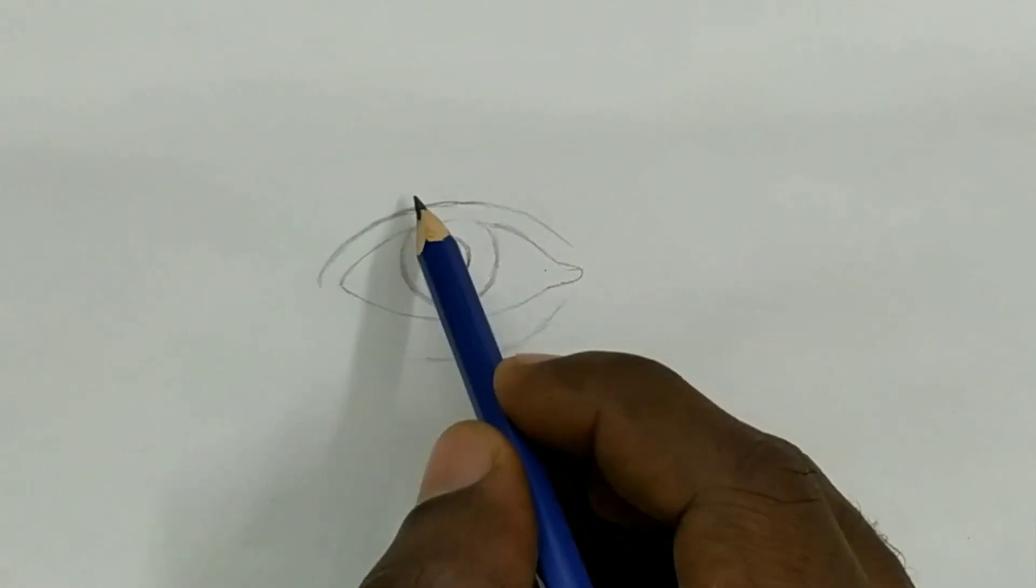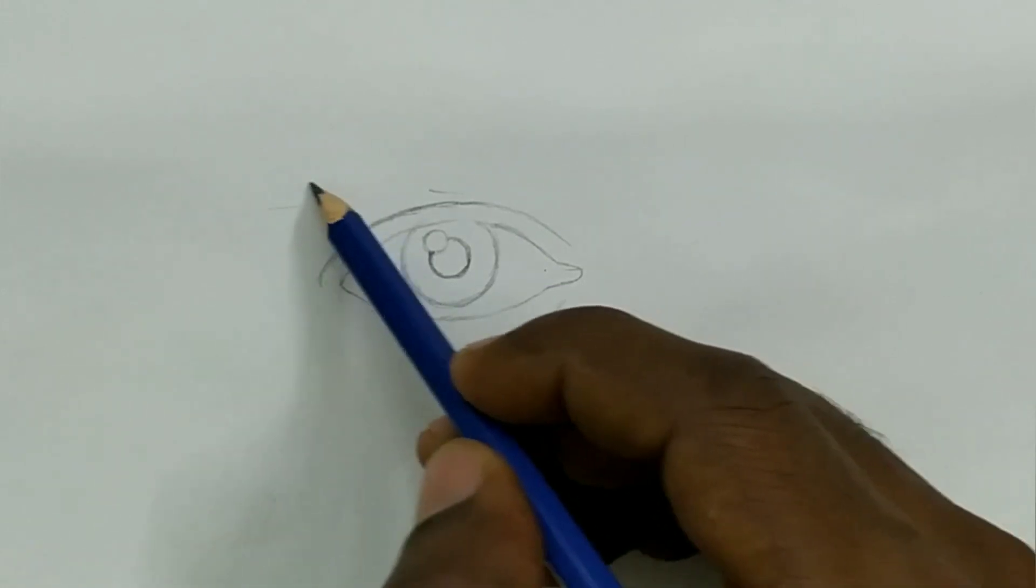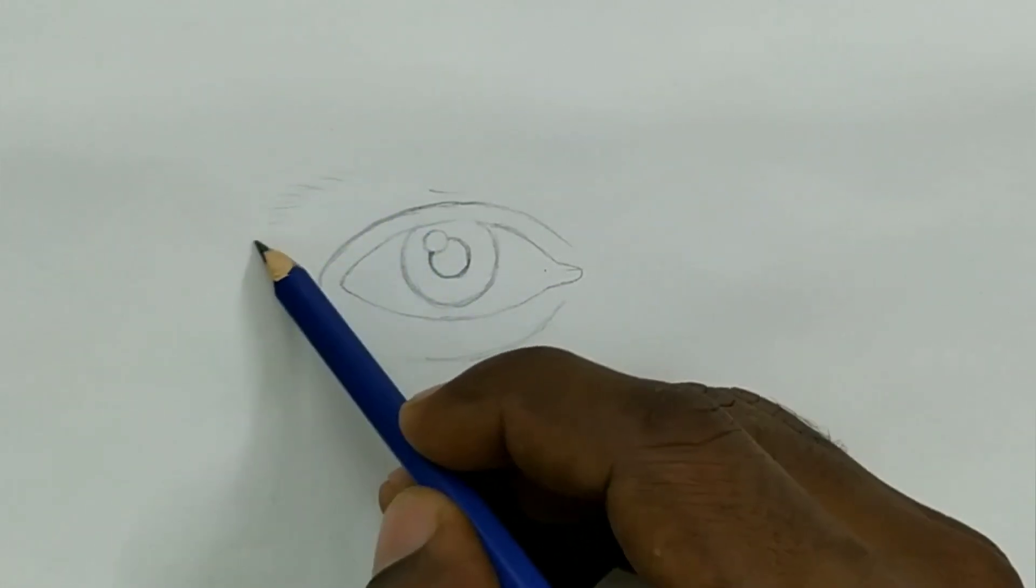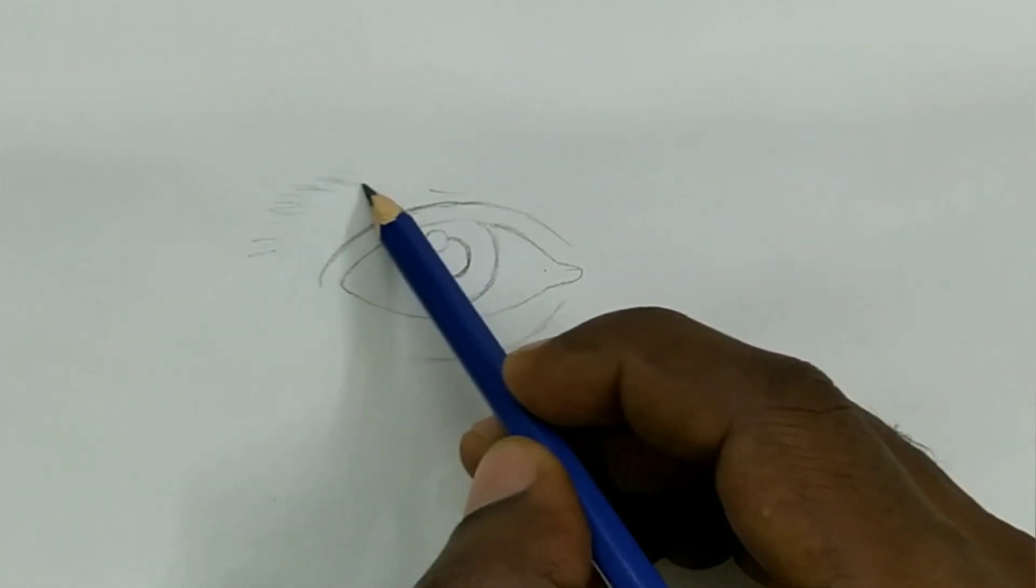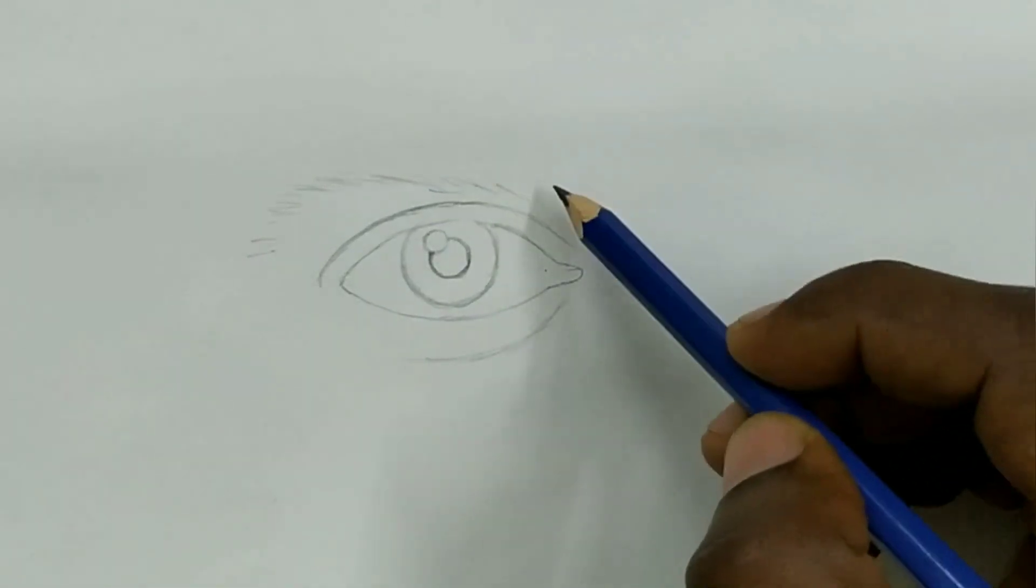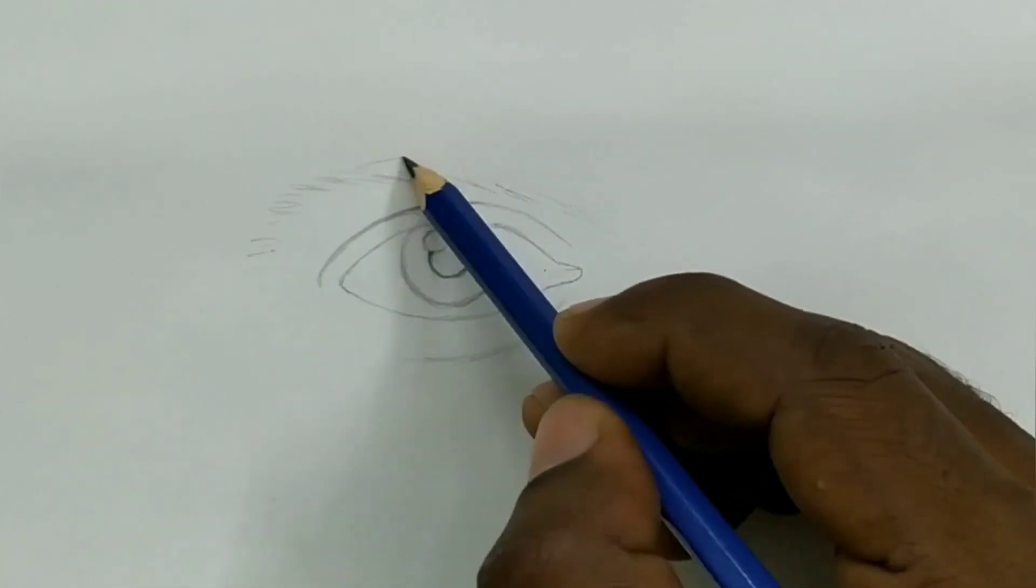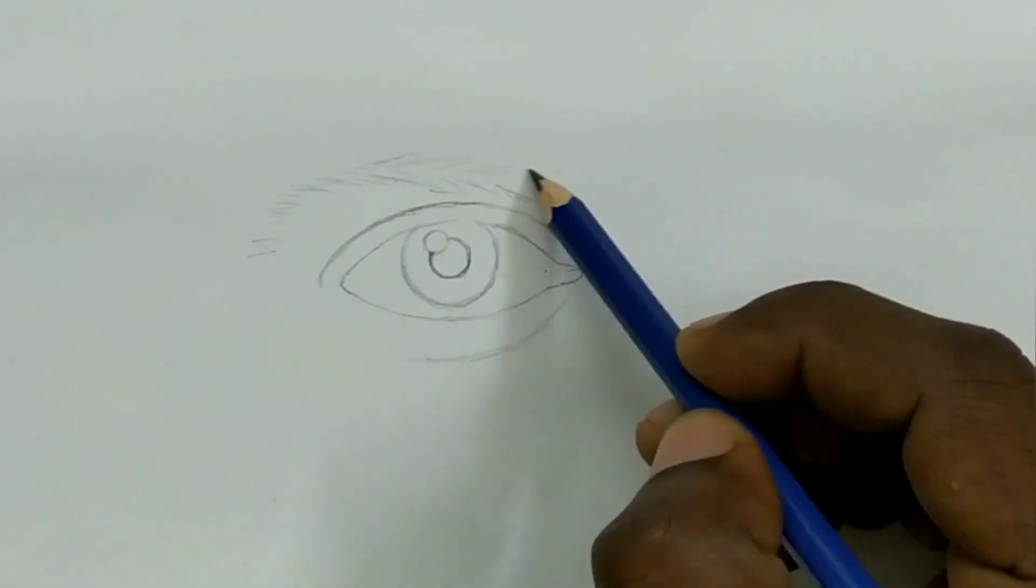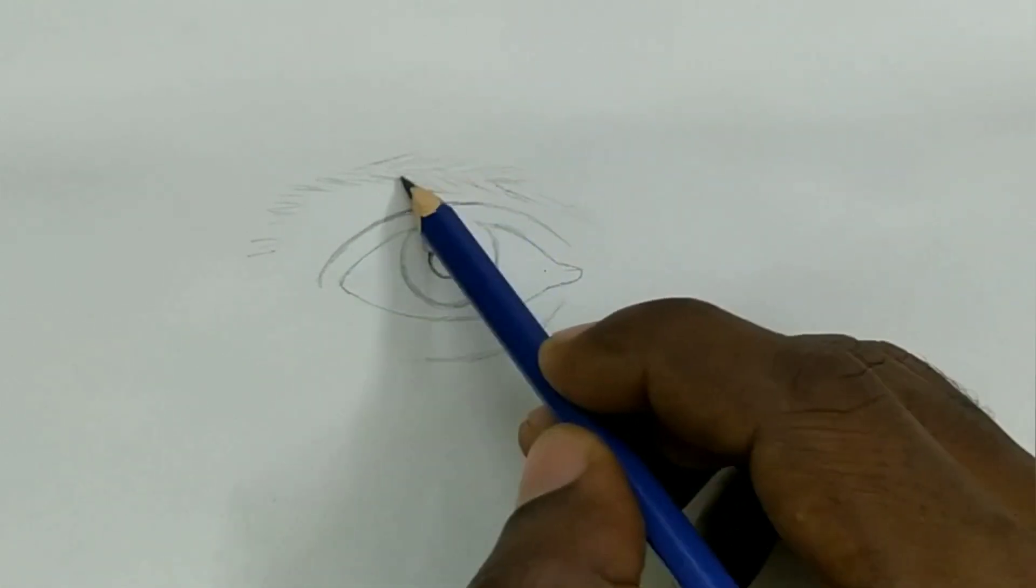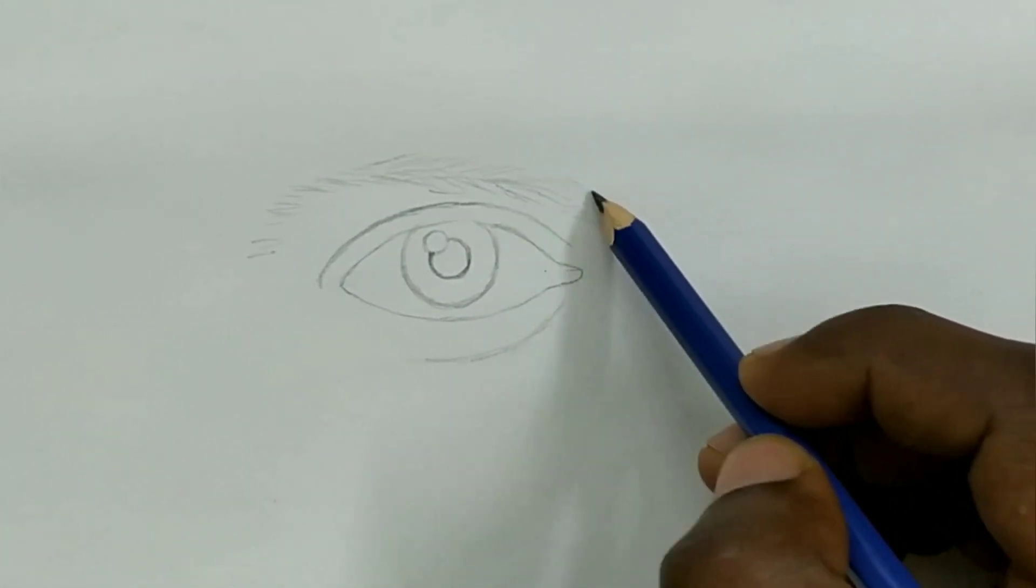Okay, now we will give little bit details to the eyebrow. See now I am adding little bit direction of the hair. Whenever we make hair, you should think about the direction of the hair. That will add up the life into the picture. See all the hairs are not in same direction. Okay now we just finish the outline of the eyebrow.